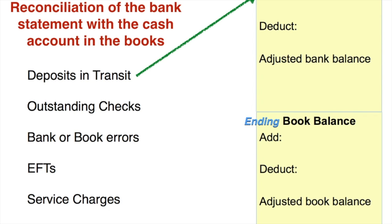An outstanding check is a check that you wrote and recorded in your books, but whoever you wrote it to may not have cashed it yet. The bank knows nothing about it because it doesn't appear on your bank statement. However, when it does clear the bank it will reduce your bank balance — therefore it's an adjustment to the bank side and it's a deduction from the bank balance.